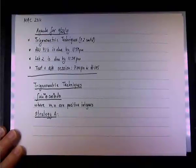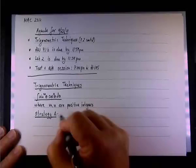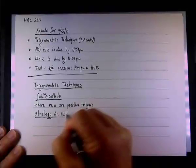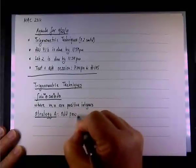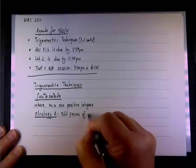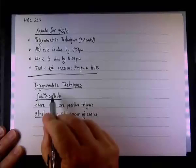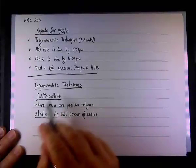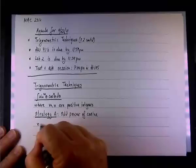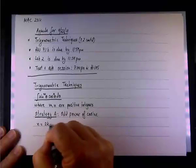This involves, and this is something we saw I think last time on Tuesday, this is when we have odd power of the cosine. So odd power of cosine, and the cosine, the exponent is n, so we're looking at n equals 2k plus 1,